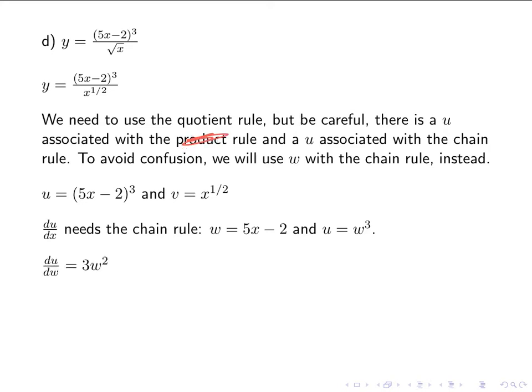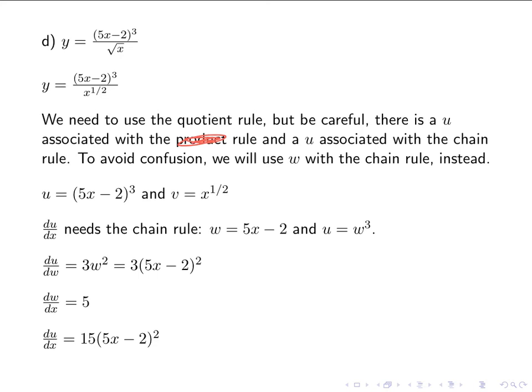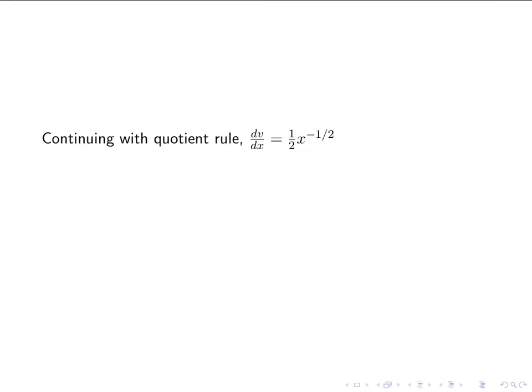du/dw is 3w squared — the derivative of w cubed. We replace what w is: 3 times (5x minus 2) squared. dw/dx is the derivative of w, which is 5x minus 2, the derivative of which is 5. So du/dx is the product of those two: 3 times (5x minus 2) squared times 5, which gives us 15 times (5x minus 2) squared. Continuing with the quotient rule, we've found du/dx; now we need dv/dx, which is just the power rule: 1 half x to the negative 1 half.